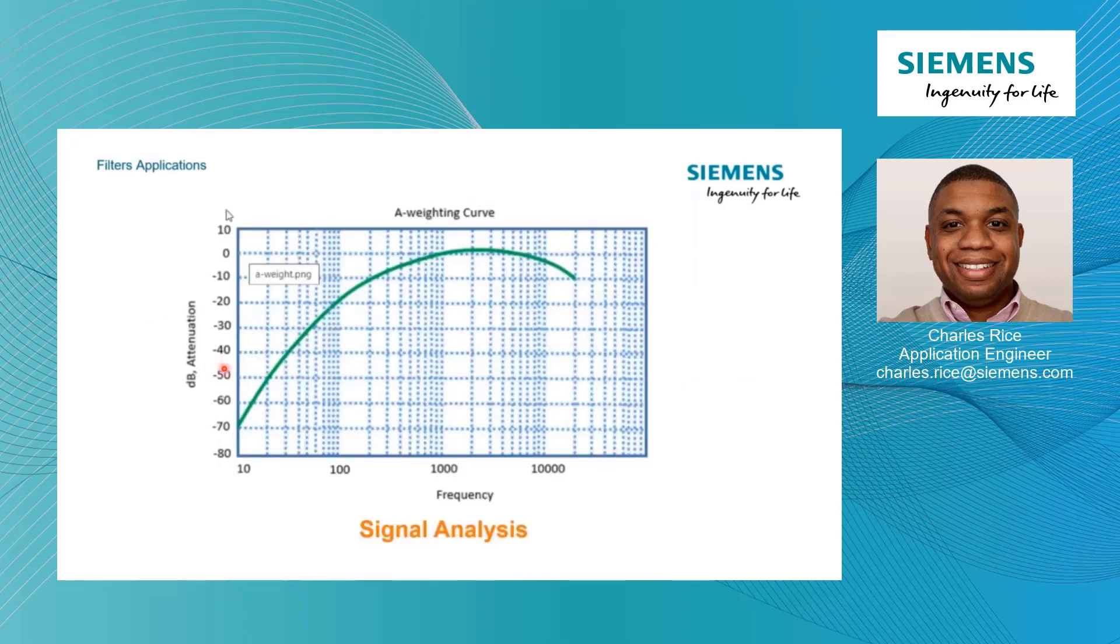Another application could be signal analysis. Maybe you're familiar with this - the A-weighting curve. It's used on microphone data to introduce characteristics that simulate human hearing into a microphone recording. So we can use this filter to alter the frequency content of a time signal by reducing certain frequencies and maybe even amplifying others.